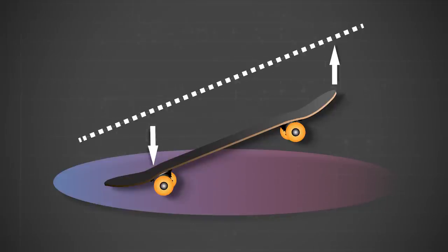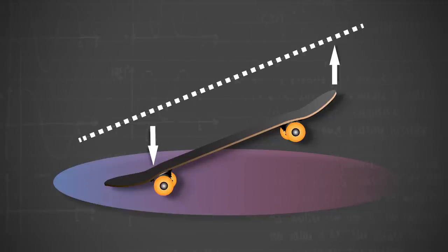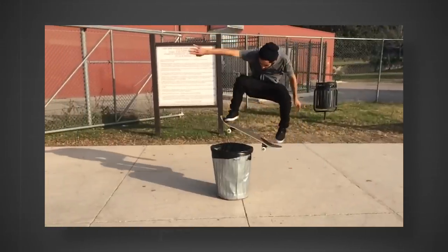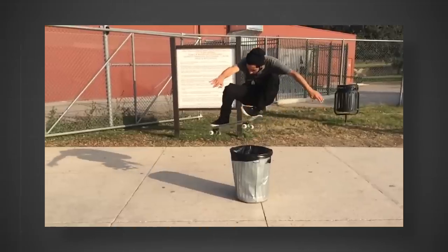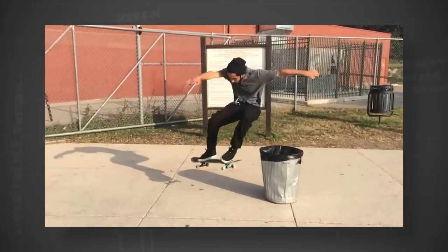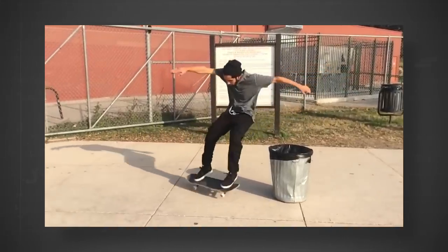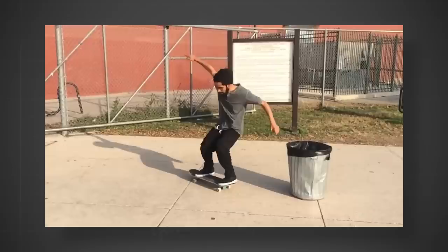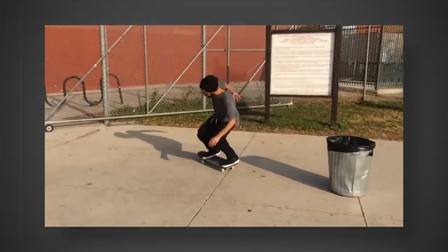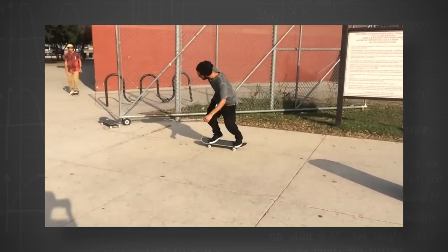However, an additional step is further required to clear the obstacle. As the parabola begins, the skateboarder uses friction to lift the board even higher. Friction is a force that opposes motion between two surfaces, so the skateboarder glides his front foot up the grip tape. The opposing interaction of these two surfaces causes the board to move further upward.